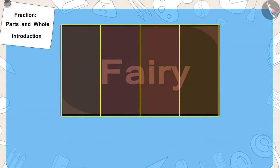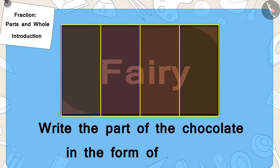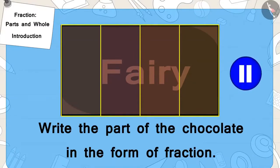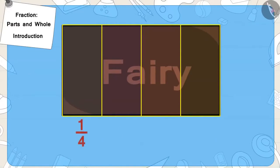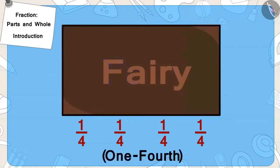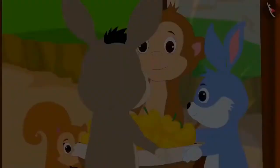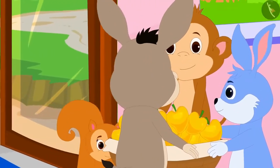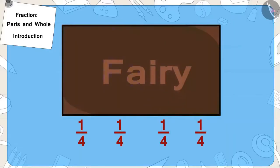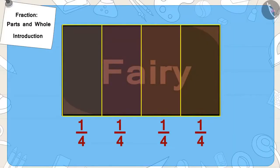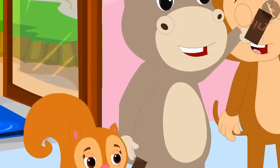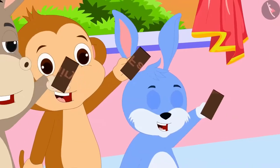Write the part of the chocolate received by each one of them as a fraction. If you wish to, you may stop the video and find the answer. Well done, children. You have found the correct answer. We also call one by four as one fourth. Finally, the four of them reached Appu's house with the mango basket. Appu gave Bunny the chocolate, divided it into four equal parts, and gave each of them one part.